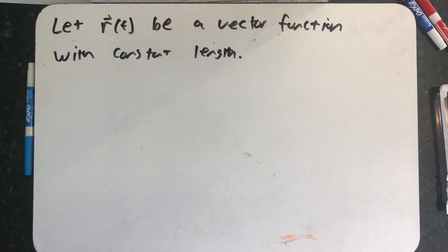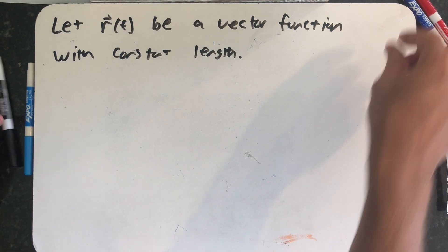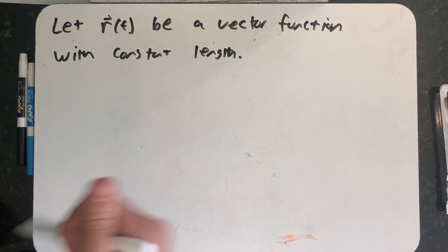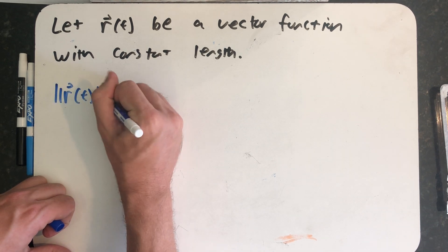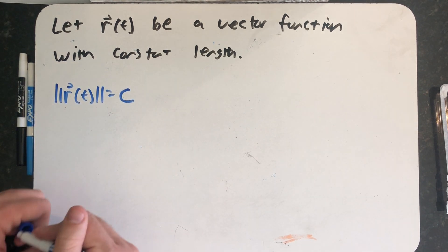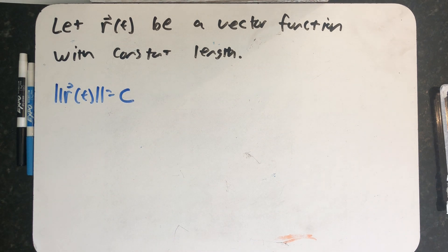Let R of t be a vector function with a constant length. So what I really know by this statement is I have some vector function that when I take its magnitude I always get the same number c and it has constant length.